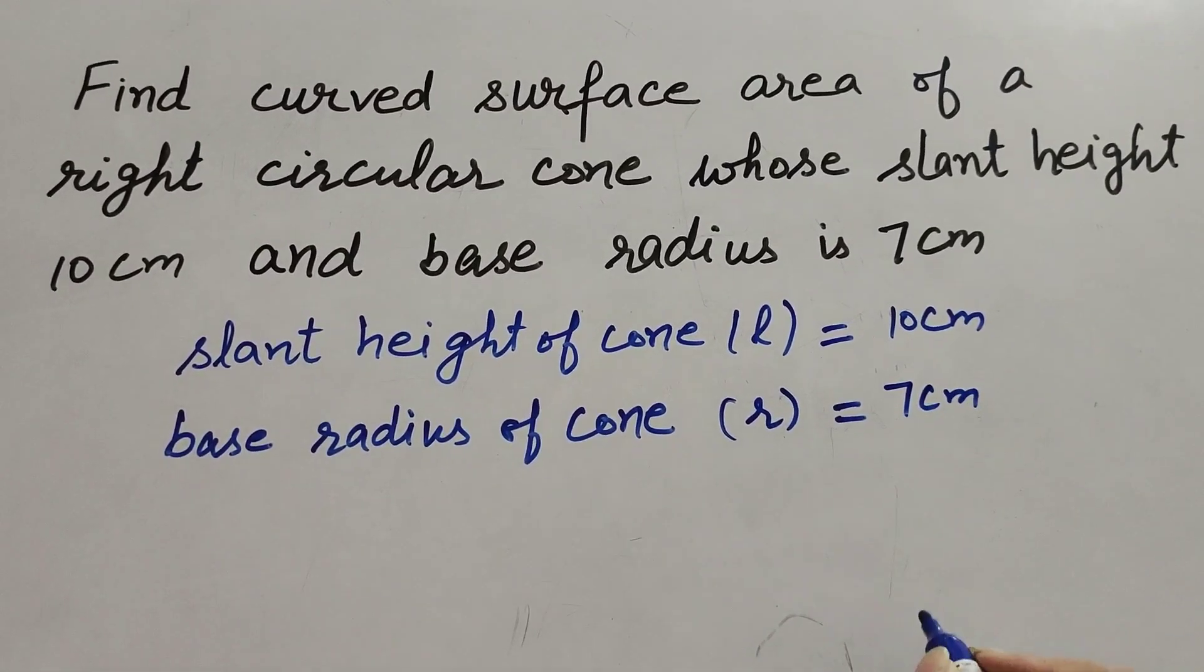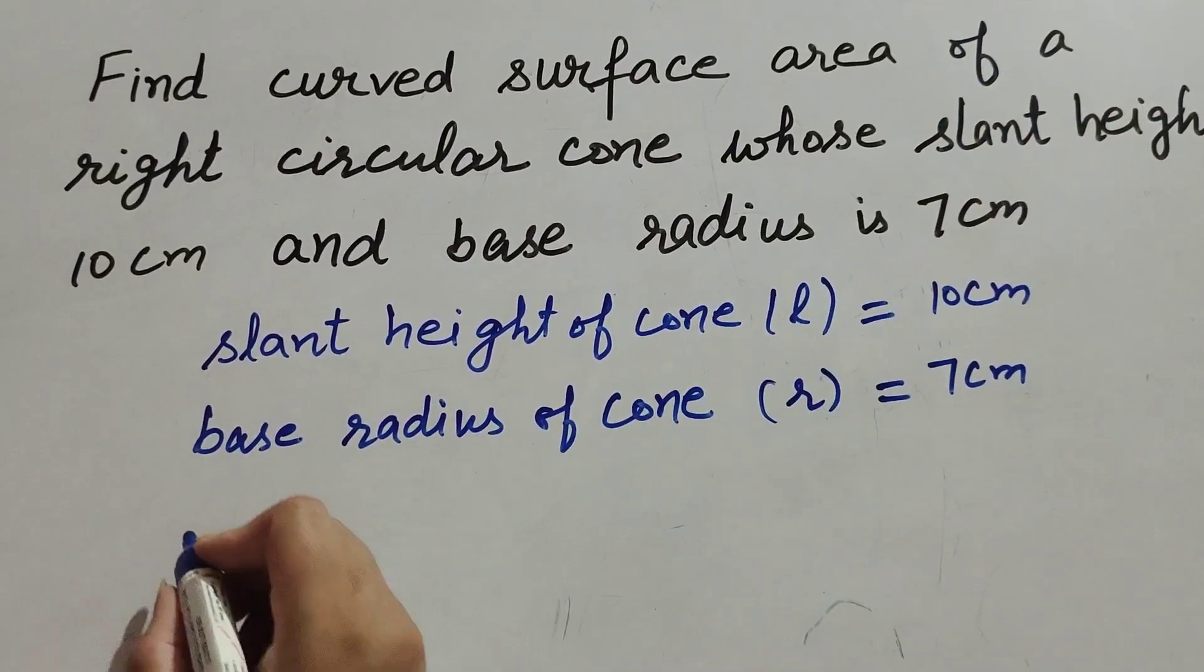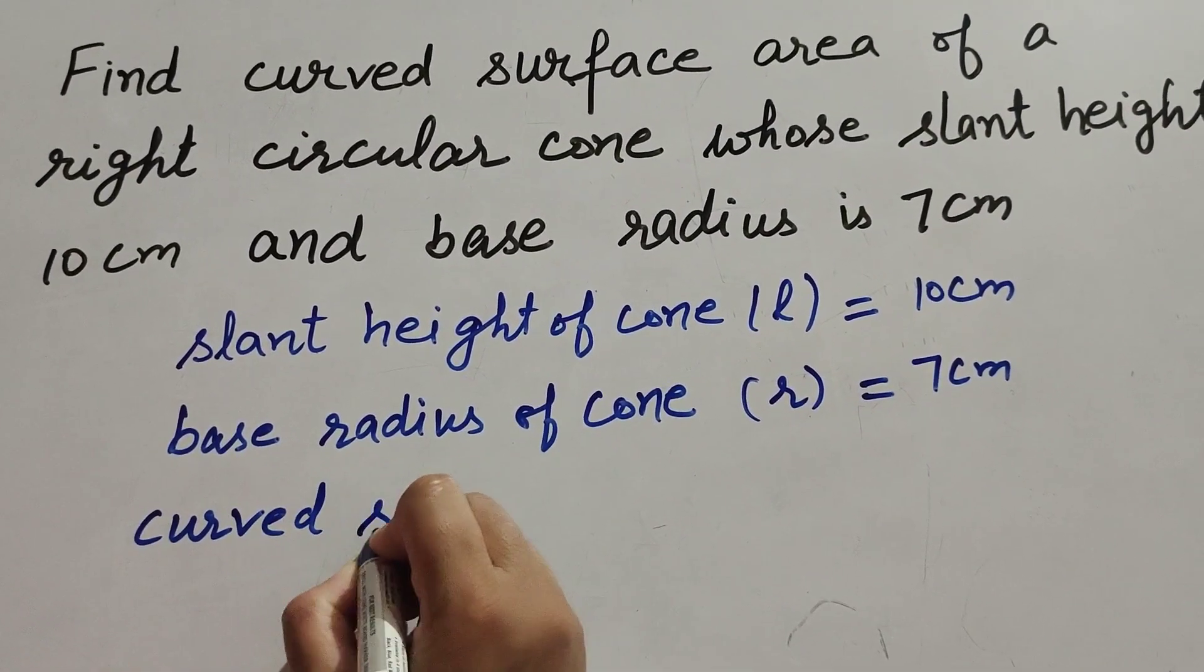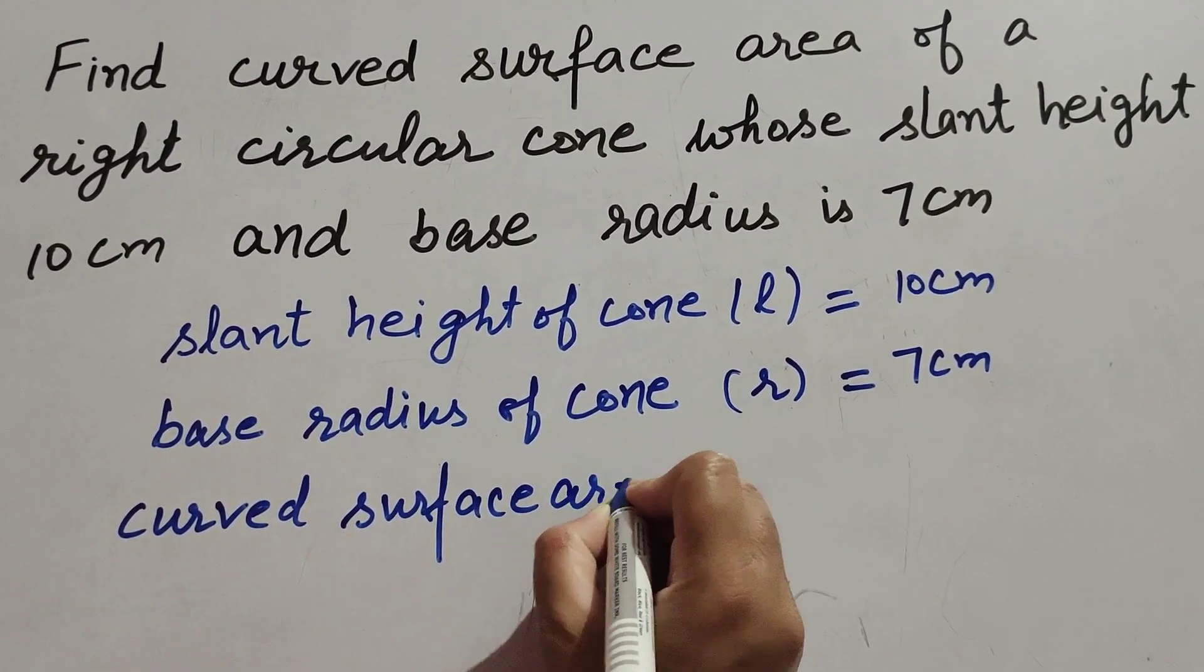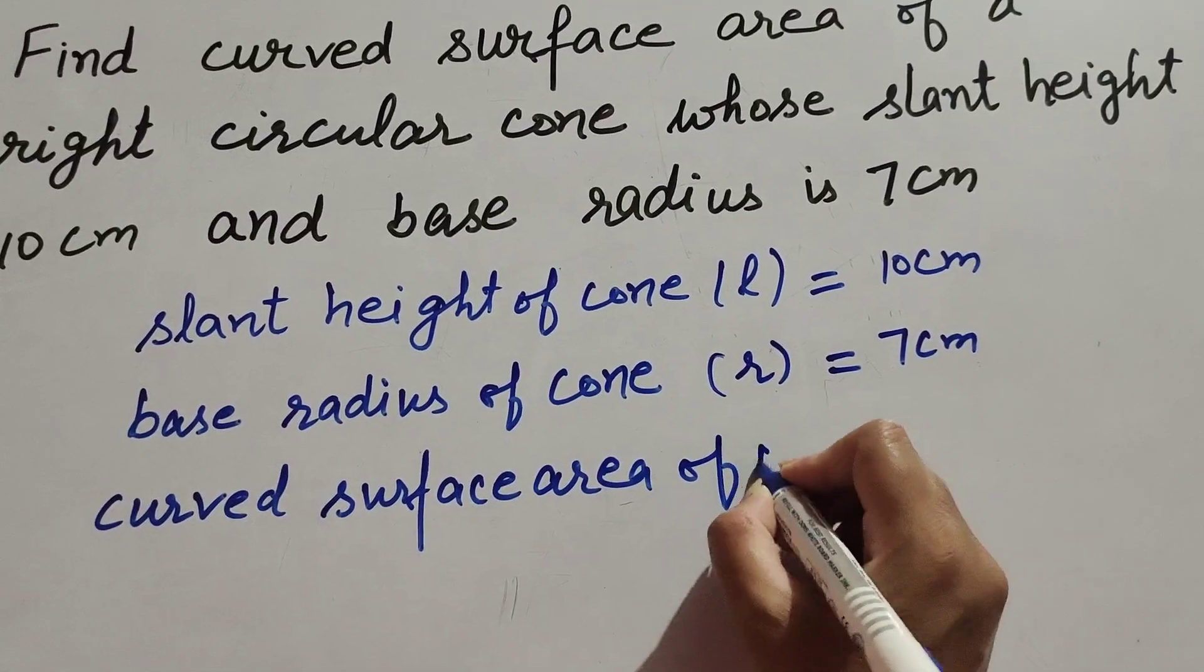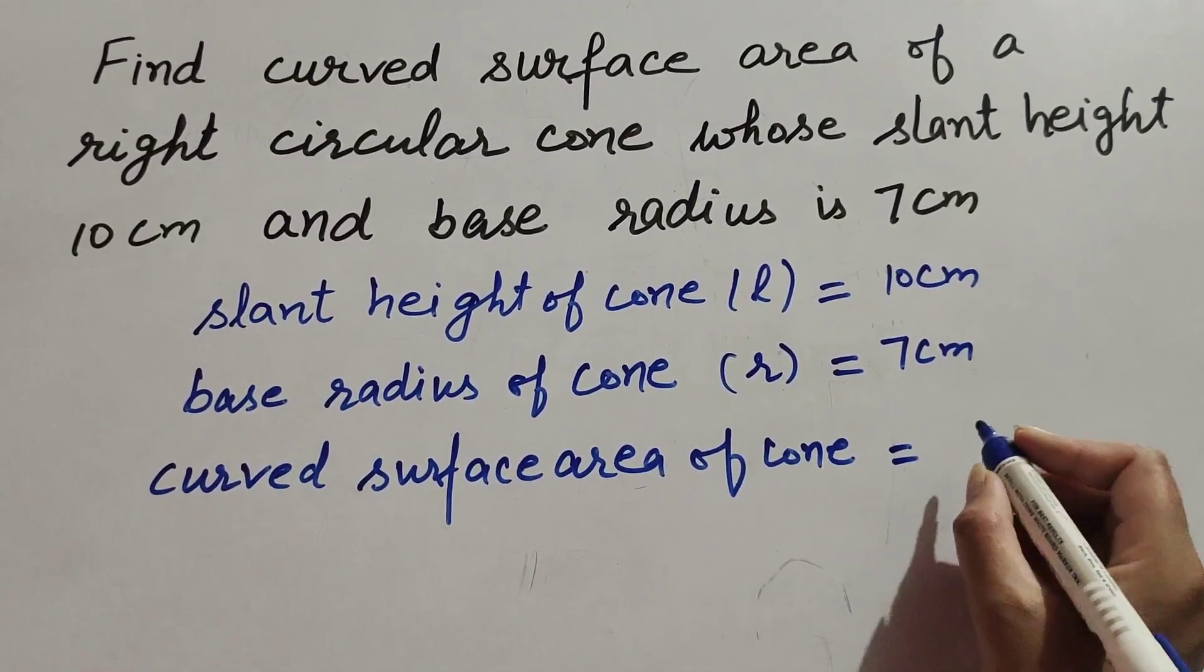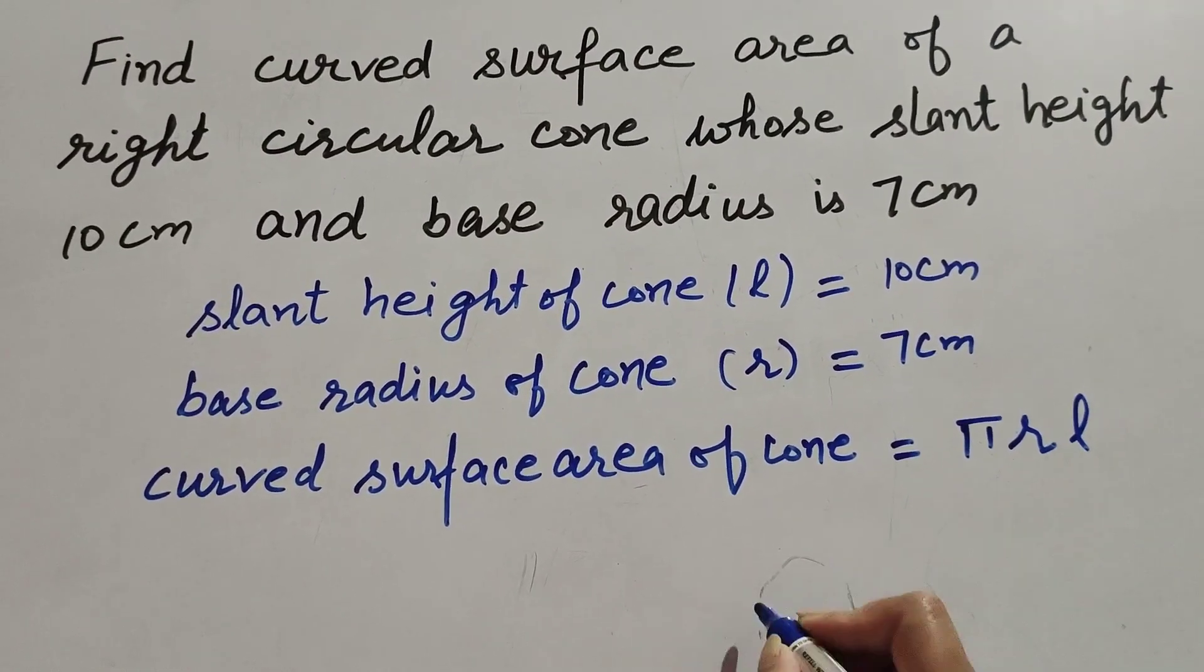We need to find curved surface area of right circular cone. So curved surface area of cone equals - we know the formula to find curved surface area of cone, it is πrl.